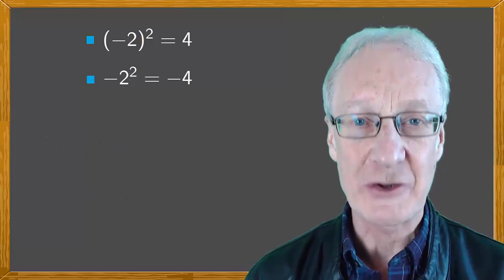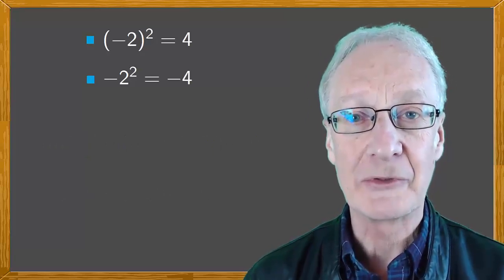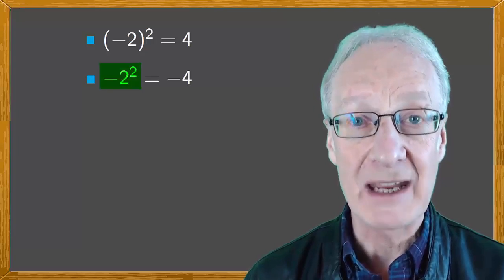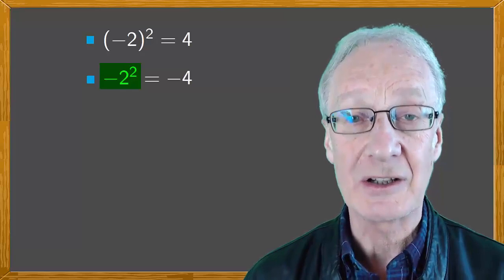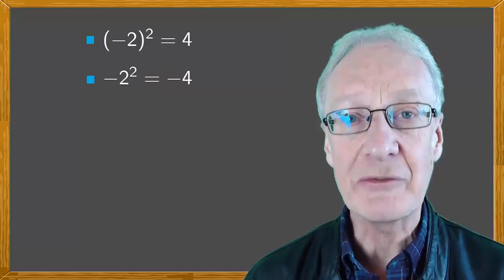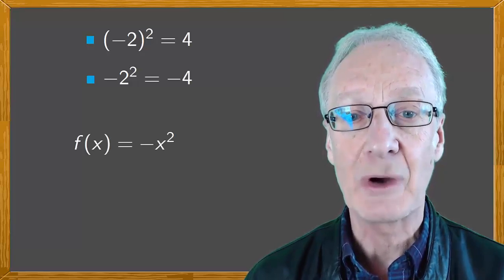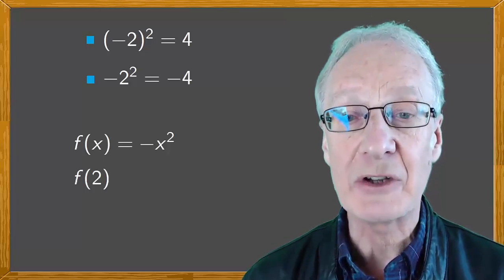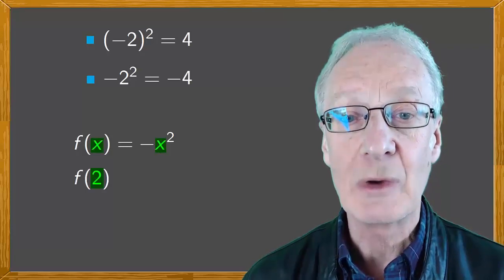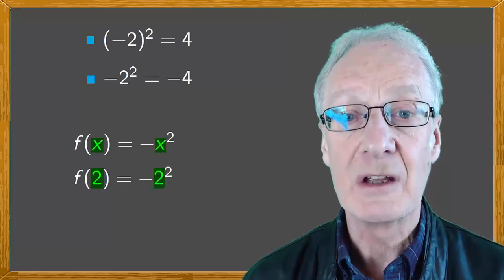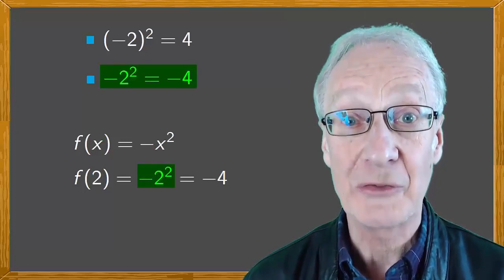There's been a bit of chatter about this on the internet recently, with some people suggesting that writing -2² is cheating or artificial. Well, consider the function f(x) = -x². If we calculate f(2), that is, we substitute 2 for x, we have -2². And this, as you already know, is -4.